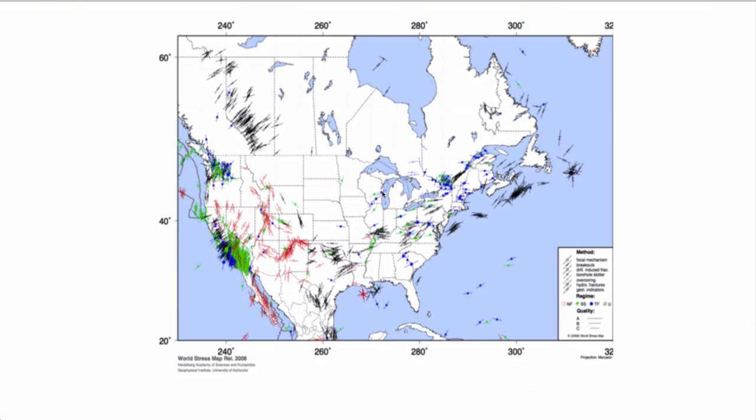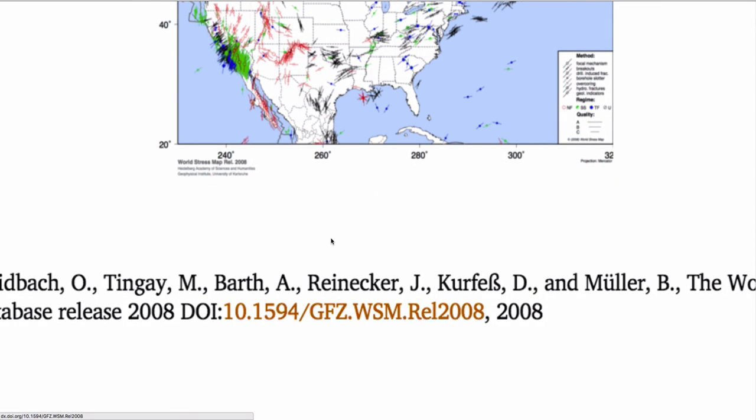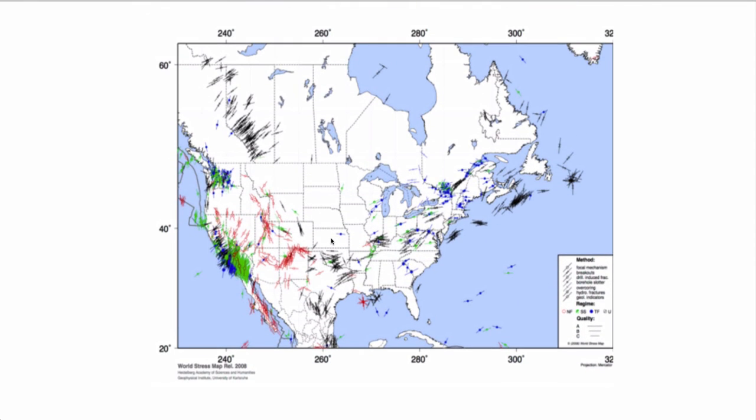So we have these stress maps. I provide a reference there to this paper. But basically, this is a compilation of stress data that's taken from numerous sources, including essentially all of those I just mentioned. Breakouts, hydraulic fractures, mini-fracture tests, other local measurements, earthquake focal point. And so, the colors represent the types of measurements you see. And the dots are really just where all these would occur. And the lines indicate the direction of maximum horizontal principal stress.